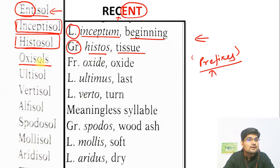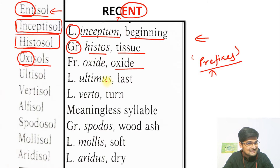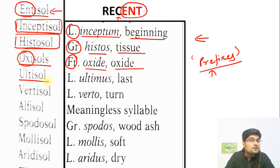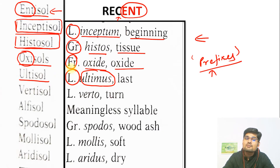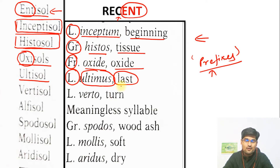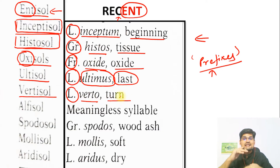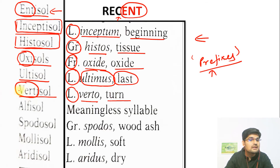Then we have Oxisol. The word 'oxy' resembles oxide — coming from the French word 'oxide' — indicating an oxygen- or oxide-containing soil. Then Ultisol, from the Latin 'ultimus' or 'ultimate,' meaning it is in the last or ultimate stage of its formation. Then Vertisol, from the Latin 'verto,' meaning turning soil — a layer which has turned or inverted, like the word 'invert.'